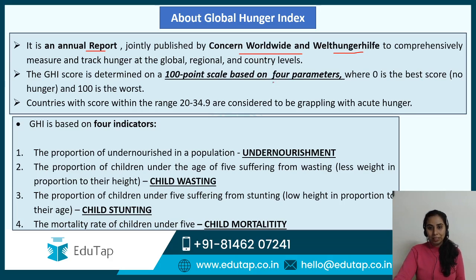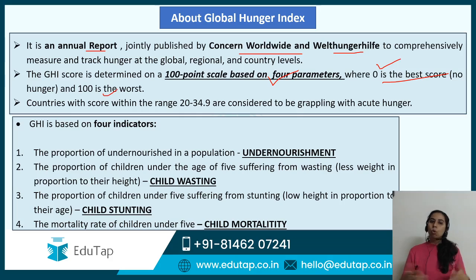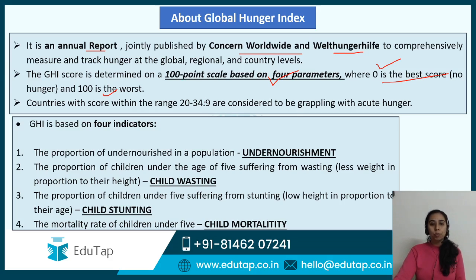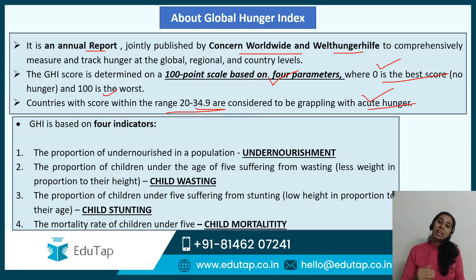What are these four parameters? They are very important. But first, about the point scale: zero indicates the best score, whereas 100 is the worst. No country is actually at either extreme — they all lie somewhere in between. Countries within the range of 20 to 34.9 are considered to be grappling with acute hunger. India's score is 27.2, so India falls in this particular category.